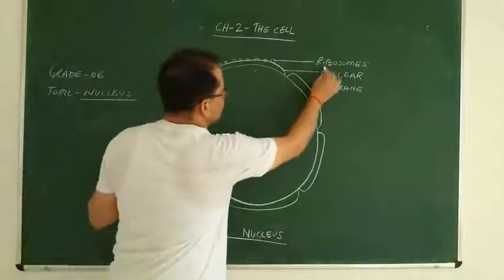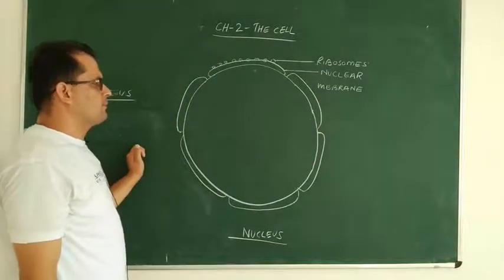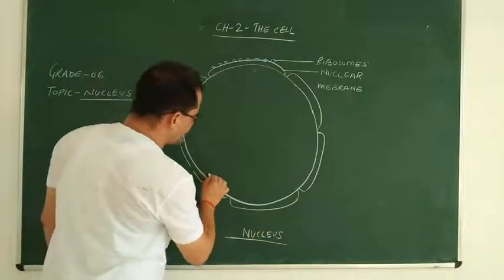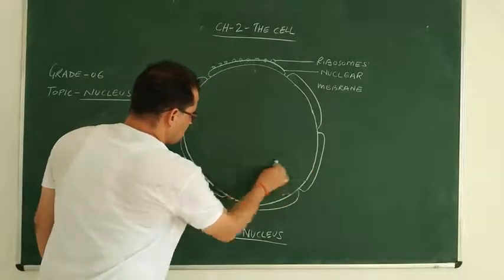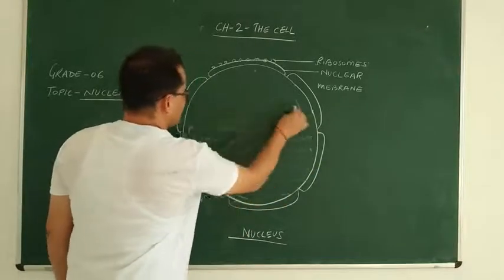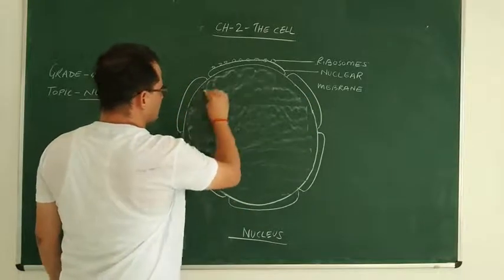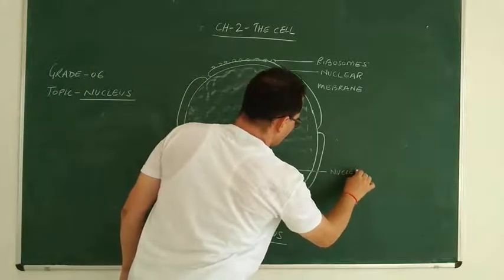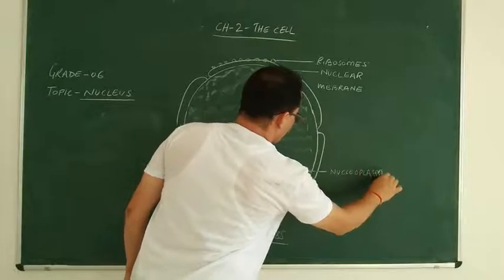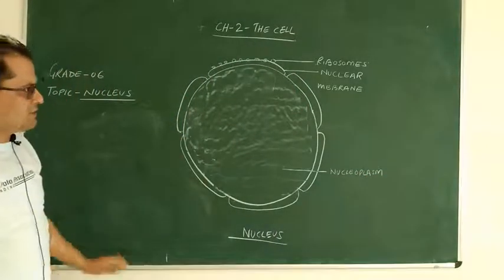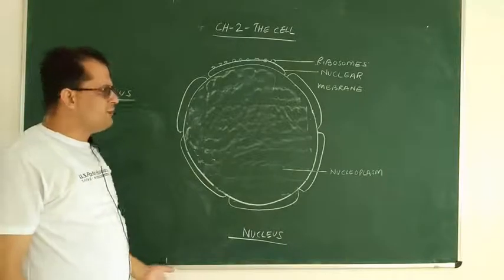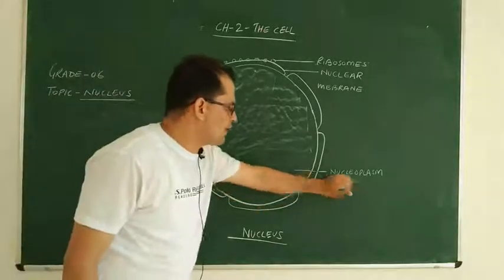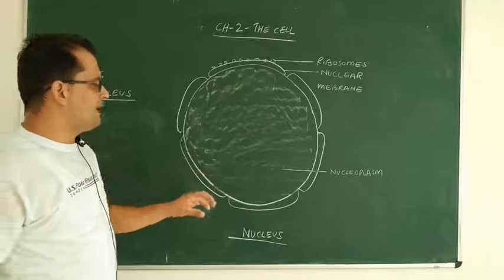These ribosomes help in the synthesis of proteins. Now, this nucleus contains a fluid which is known as nucleoplasm. Just as the cell contains a jelly-like substance called cytoplasm, in the same way the nucleus contains a fluid known as nucleoplasm.